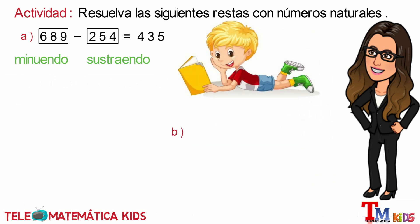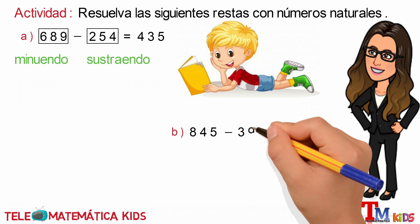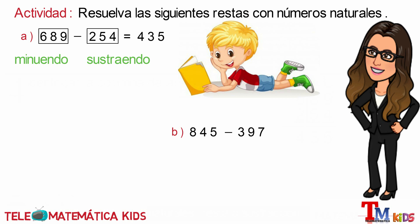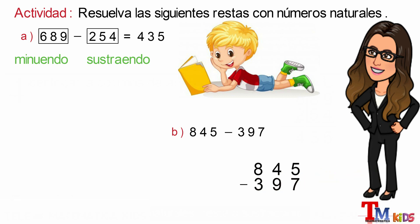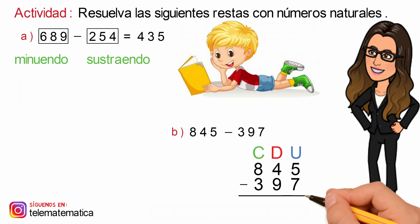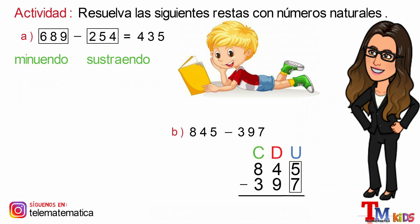Literal B: 845 menos 397. En primer lugar, escribiremos los números verticalmente, con el minuendo encima y el sustraendo debajo. Comenzamos con la columna de las unidades, pero no podemos restarle 7 al 5, entonces le pedimos una prestada a la decena. El 5 se transforma en 15 y el 4 se transforma en 3. Luego restamos 15 menos 7, que es igual a 8.